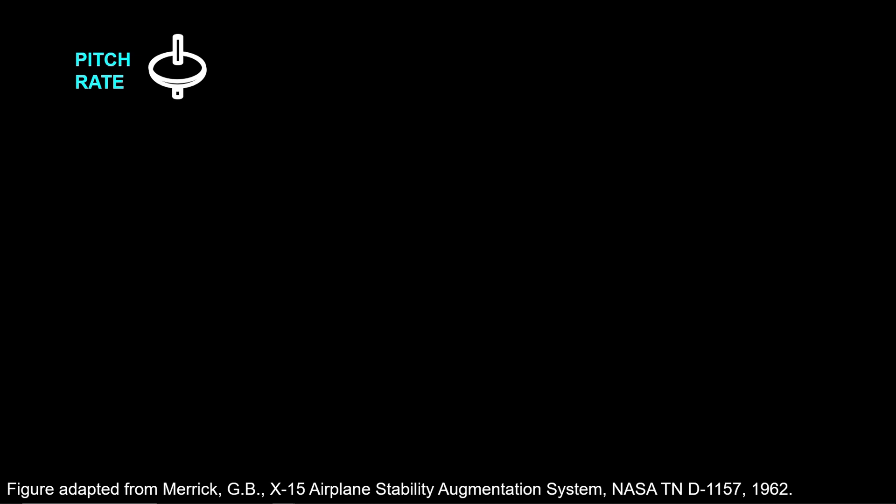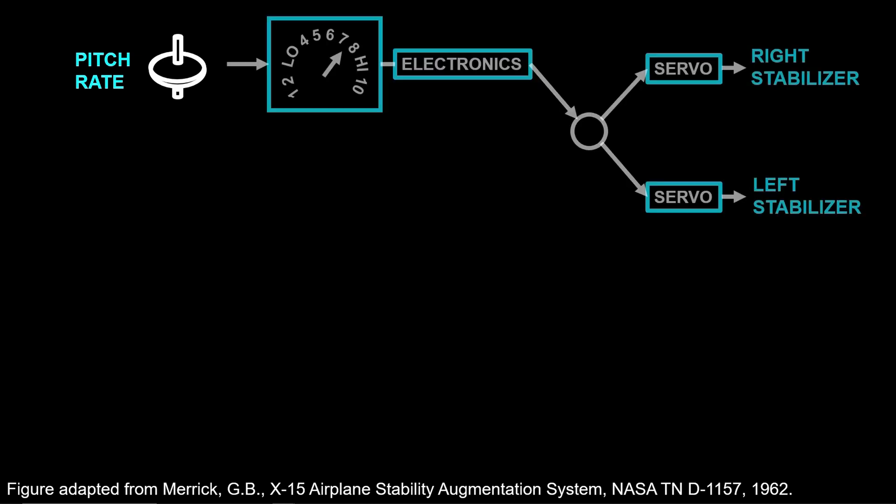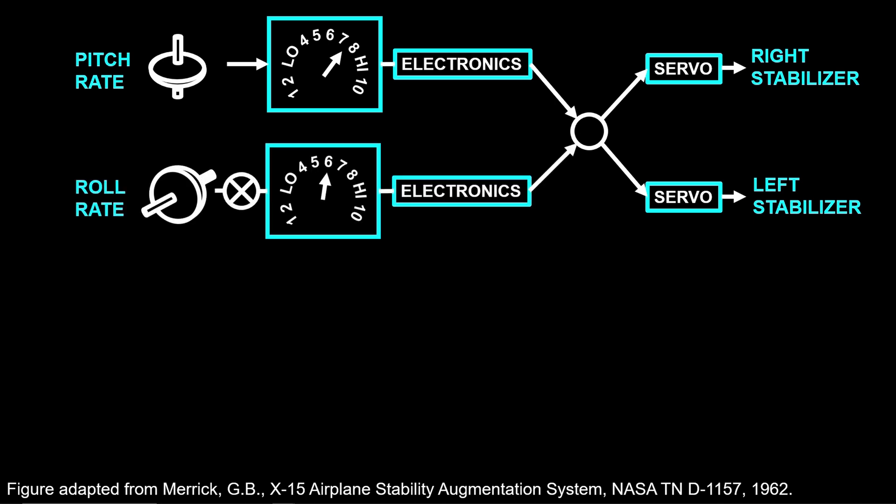Here, pitch rate sensed from a rate gyro is amplified through a pilot-selected gain, literally a knob in the cockpit. And the amplified signal is commanded as symmetric deflections to the right and left stabilizers. Roll rate, sensed from a gyro, is amplified through a pilot-selected gain and then commanded as differential deflections to the right and left stabilizers.